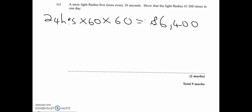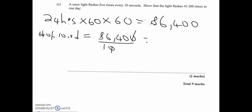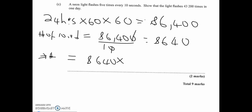The light flashes five times every 10 seconds. Find how many 10-second intervals are in 86,400 seconds: 86,400 ÷ 10 = 8,640. In each 10-second interval the light flashes five times, so the number of flashes in a day is 8,640 × 5 = 43,200.